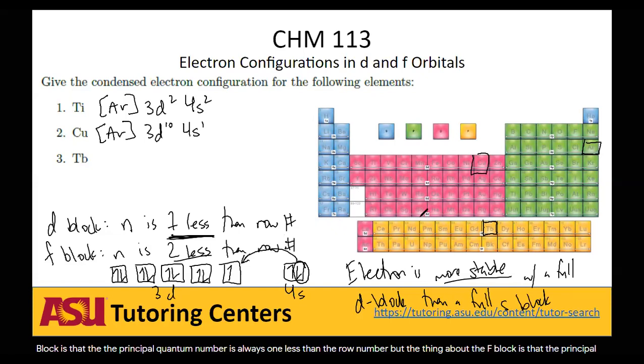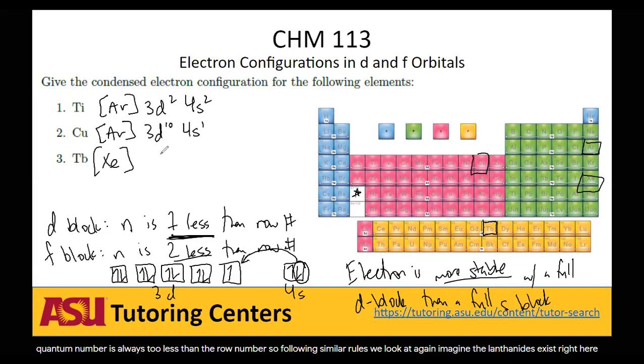So following similar rules, we look at—imagine these lanthanides exist right here. So we would look at the noble gas that comes before it, which is xenon. And then we would write 6s². But in reality, the f block would have to come first. So we would have the 6s² here.